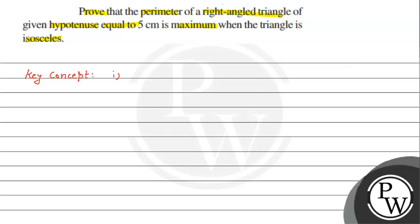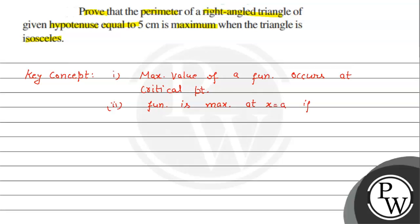We know that the maximum value of a function occurs at a critical point. Second, a function is maximum at x equal to a if f double dash of a is less than 0. Now we start the question.